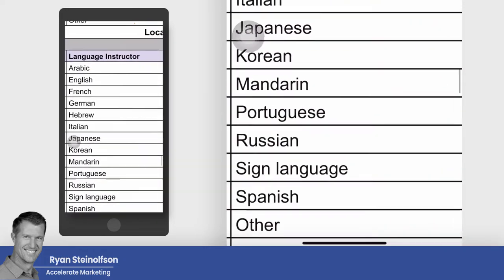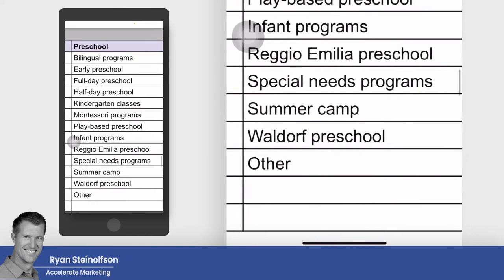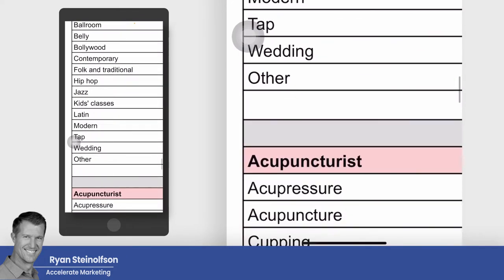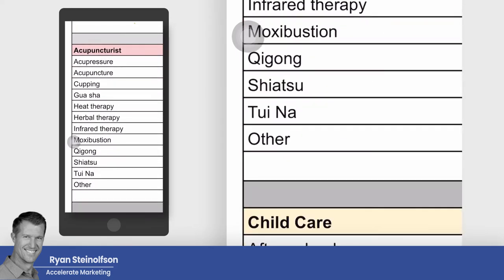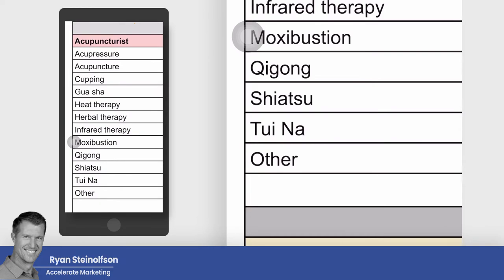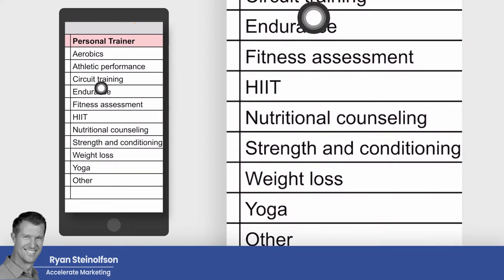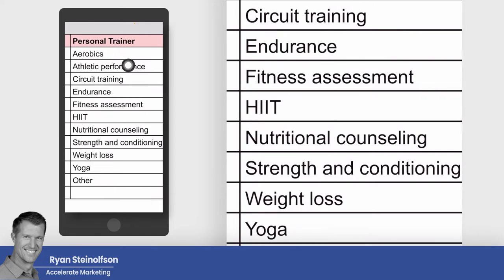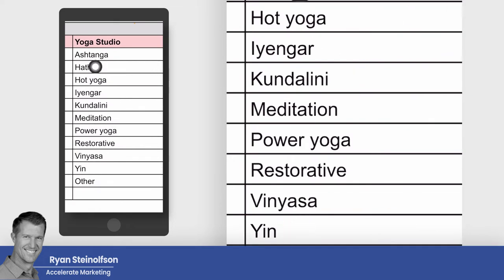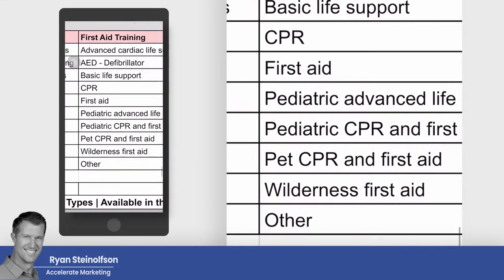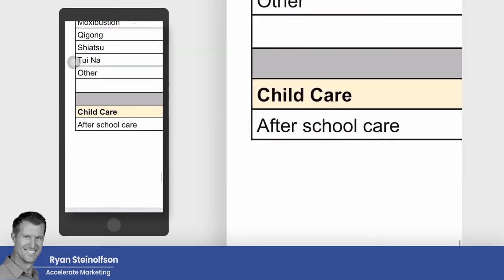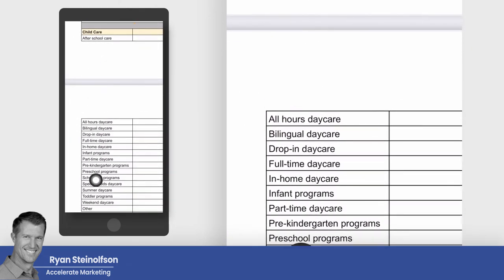Here's language instructor — that's new. Preschool, dance instructor — all new. Google really wants at least three businesses in order to start showing local service ads, but they're trying to lower that threshold. If you're an acupuncturist or a personal trainer — we just were with a lot of personal trainers this weekend — the cost per lead in the beginning is so inexpensive. It was that way for personal injury a year and a half ago when it first got started. Yoga studio, Ashtanga, Hatha, hot yoga, Iyengar — all of them are covered. Weight loss centers, first aid training. And you can see all the childcare categories — Google is definitely expanding local service ads.